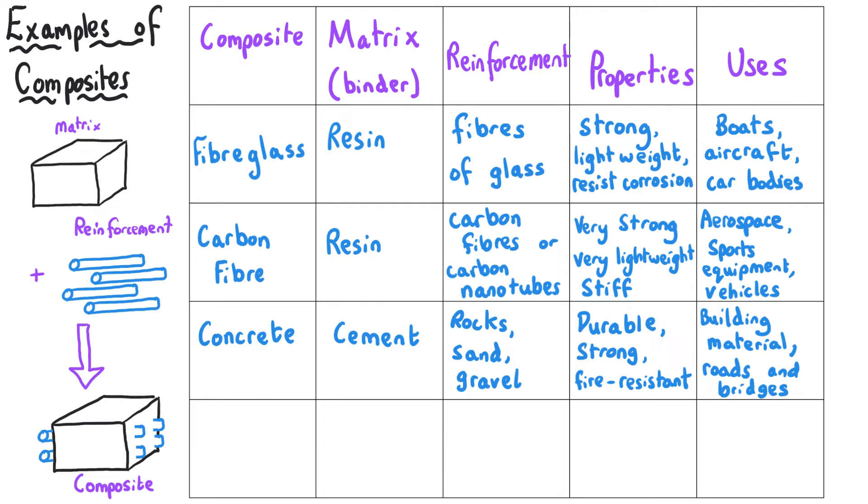There are many many more types of composites, so many that you can't possibly be expected to know them all. What you need to be able to do is think on your feet when faced with a list of properties and match those properties to a potential use. So for instance, a more obscure composite is a composite of wood and plastic.